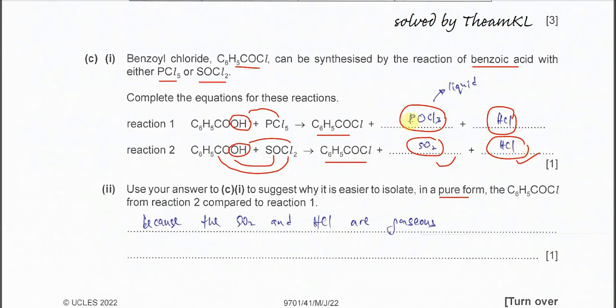But for reaction 1, the HCl is a white fume, but the POCl3 is liquid. So it will stay with the benzoyl chloride. So it means it's harder to isolate compared to reaction 2. That's the reason why.